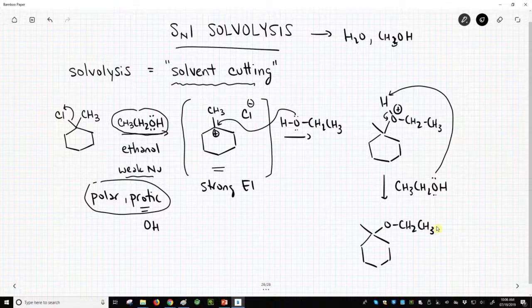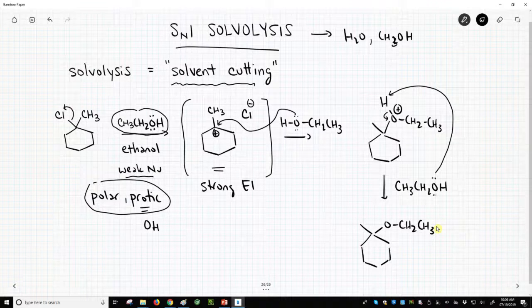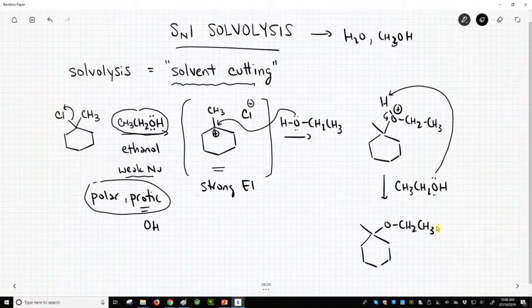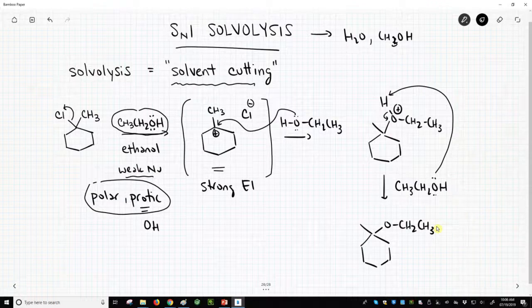So this is a solvolytic reaction in which we take our alkyl halide, we treat it with a polar protic solvent like water, or ethanol, or methanol, or any of the alcohols, and that allows this carbon-halogen bond to break to form a stable carbocation, and that will be attacked by our solvent molecule.